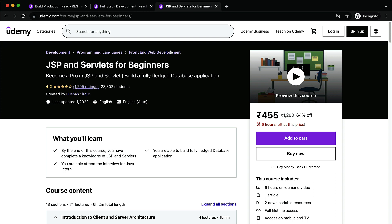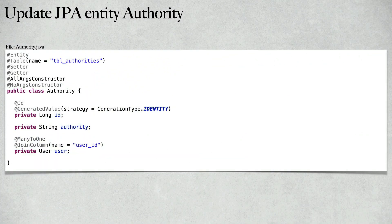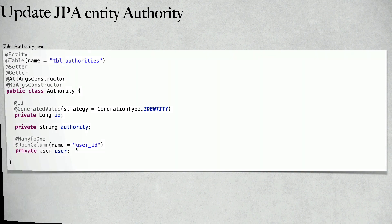The first step is to update the Authority entity class. We are going to set up a many-to-one relationship between the Authority and the User, because one user can have multiple authorities or multiple roles. Inside the Authority entity class we will create a field of type User, add the ManyToOne annotation, and add the JoinColumn annotation with the column name 'user_id' as the foreign key.